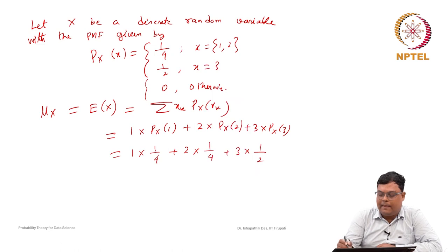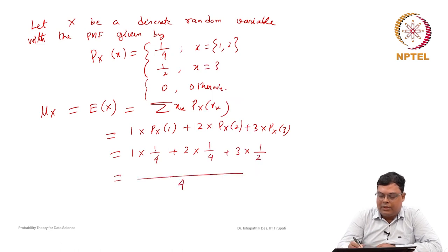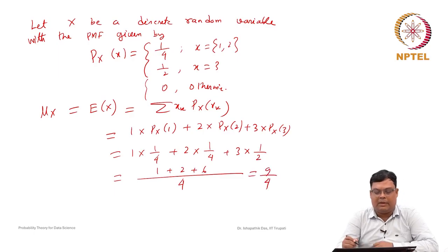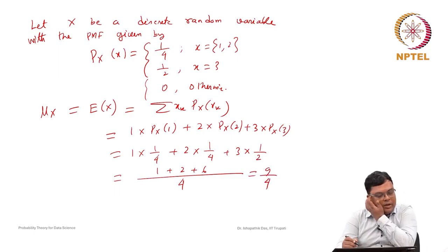Evaluating: 1/4 + 2/4 + 6/4 = (1 + 2 + 6)/4 = 9/4. So the mean μ₁' = 9/4.